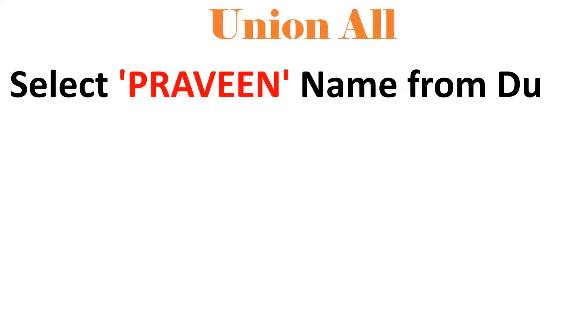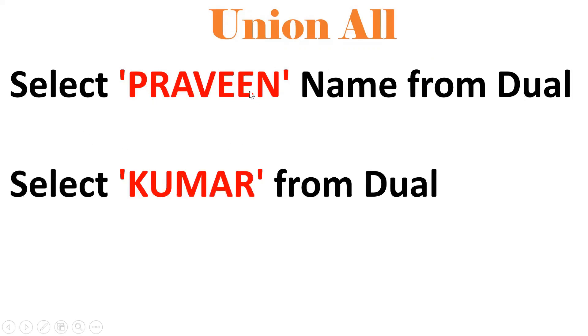UNION is one of the set operators. It is used to combine two or more result sets. For example, SELECT 'Praveen' AS name FROM DUAL combined with UNION SELECT 'Kumar' AS name FROM DUAL — if I want to club two SELECT statements into a single result set, we should go for set operators like UNION.